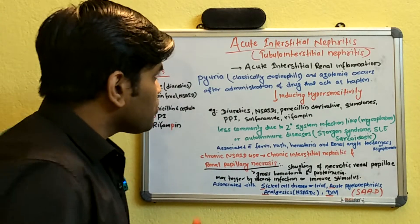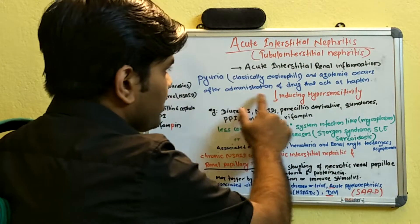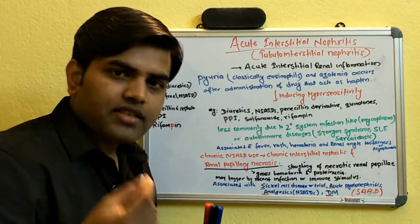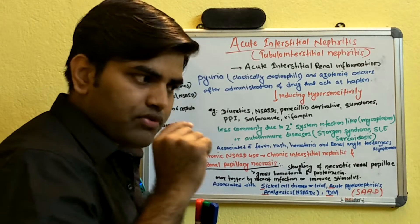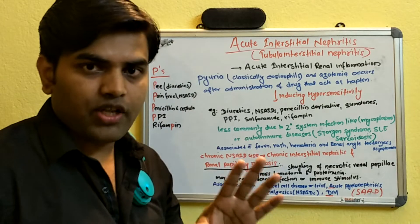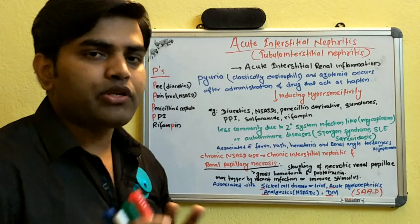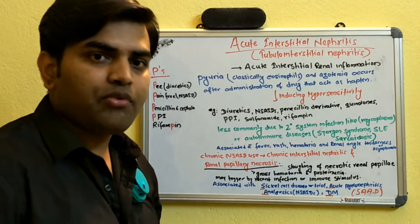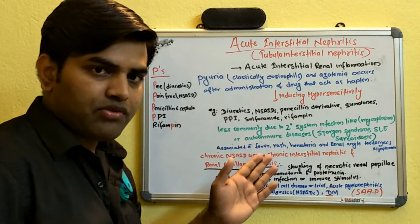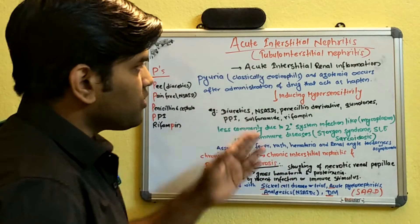A hapten is a molecule with low immunogenic capacity on its own, but when it combines with a carrier it can trigger an immune reaction. The hapten induces hypersensitivity, which in turn triggers an immune response. This is different from acute tubular necrosis — in acute interstitial nephritis, the administered drug acts as a hapten and leads to hypersensitivity.